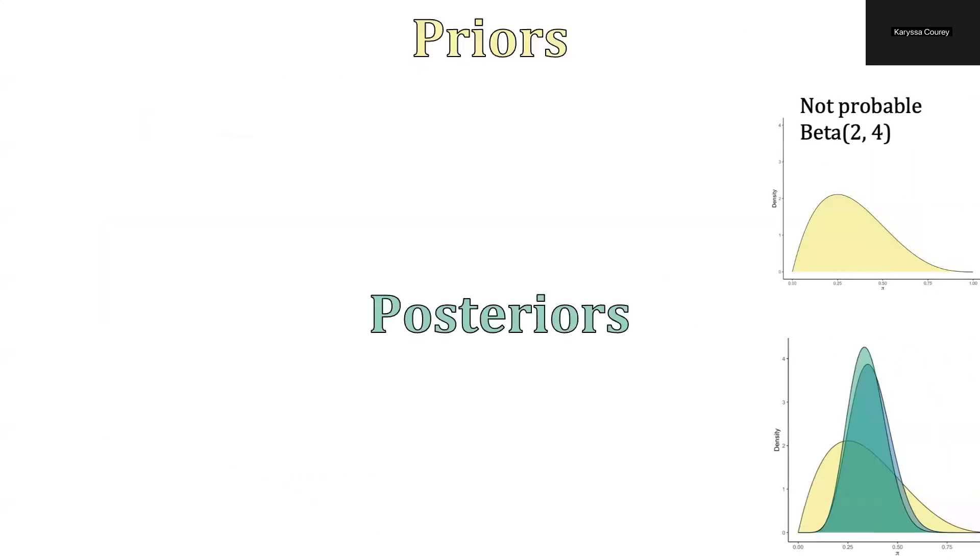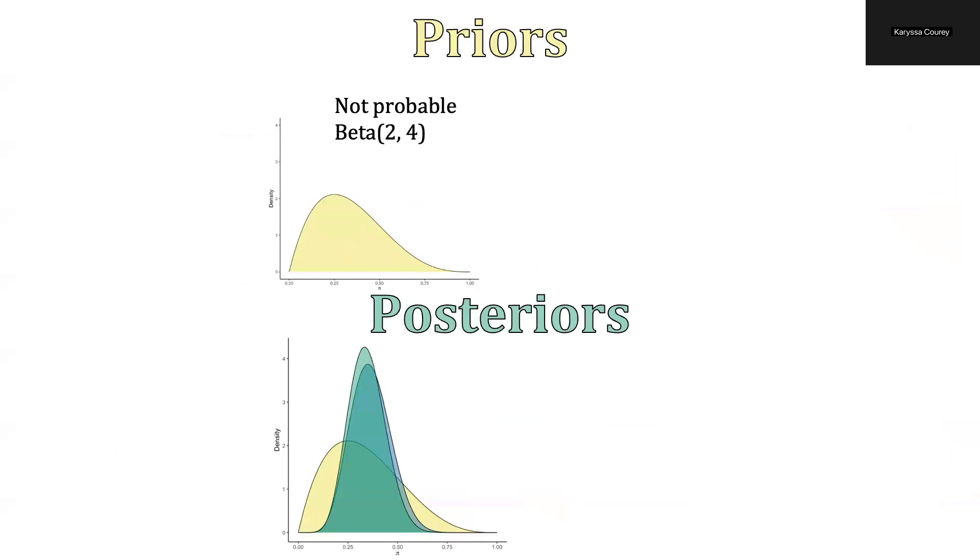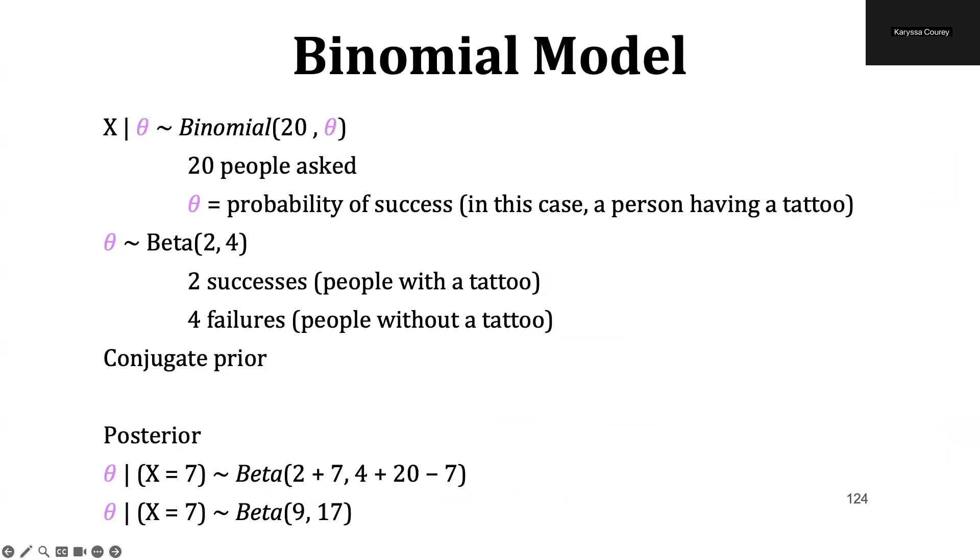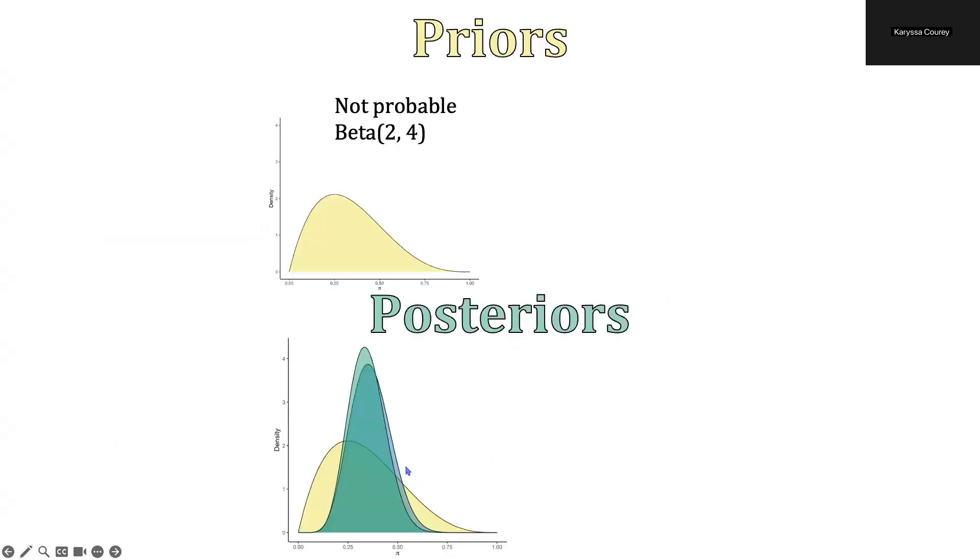Consider this example, again, this is our not probable model, we can go ahead and take these values and plug them in. And so we asked 20 people total whether or not they had a tattoo. Theta here is our probability of success. And we are estimating theta as a beta distribution with the hyperparameters 2, comma, 4. And then we can go ahead and plug in these values to get our posterior distribution. And in this case, we get a beta distribution with hyperparameters 9, comma, 17. And that is what we see here in this green distribution.